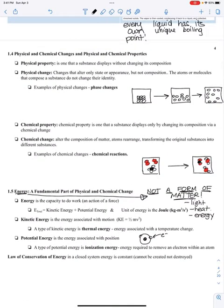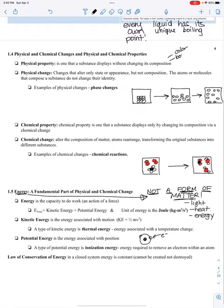Finally, the last thing we'll talk about before you get into some exercises is physical and chemical changes. So, we've talked about pure substances, and we've talked about mixtures. Let's talk about how pure substances could change into each other, or we could have mixtures kind of changing as well. So, a physical property is one that a substance displays without changing its composition. So, for example, like color, boiling point, or melting point. Those are examples of properties that are physical. Physical changes change that alter only the state or appearance, but it does not change the composition.